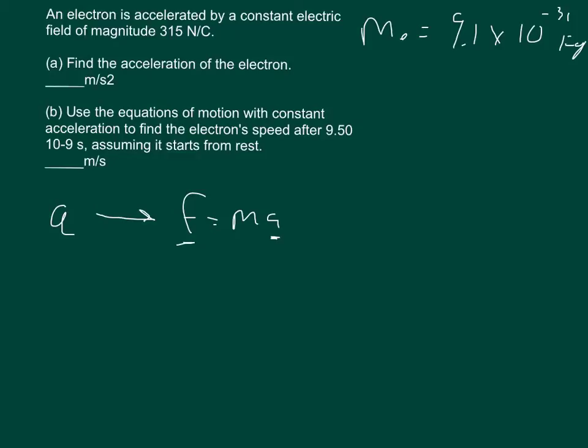So in order to find the force, I need another equation for force. Since it gives me the electric field, I'm automatically thinking that force is equal to q times the charge times the electric field. It gives me the electric field in the problem, and I know the charge on an electron can be looked up: q_e is equal to 1.6 times 10 to the negative 19 coulombs.